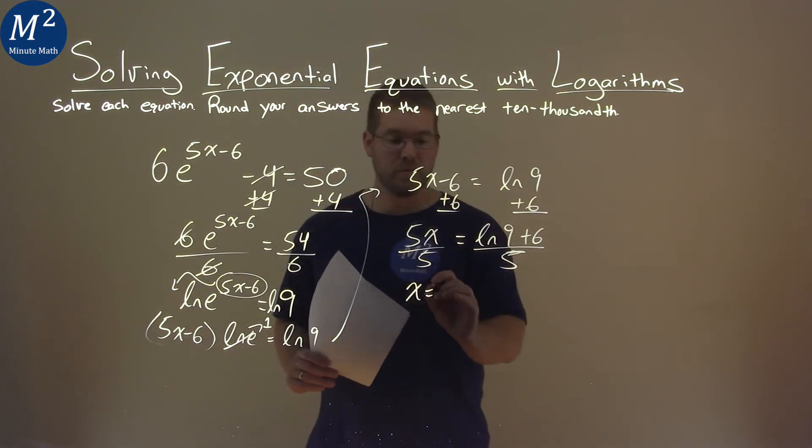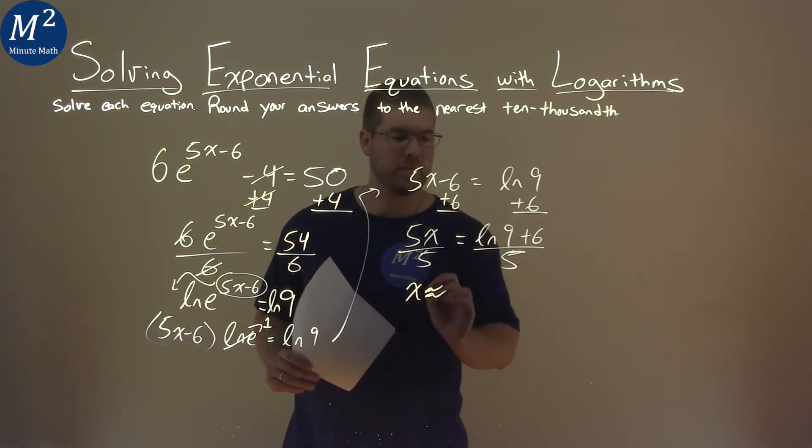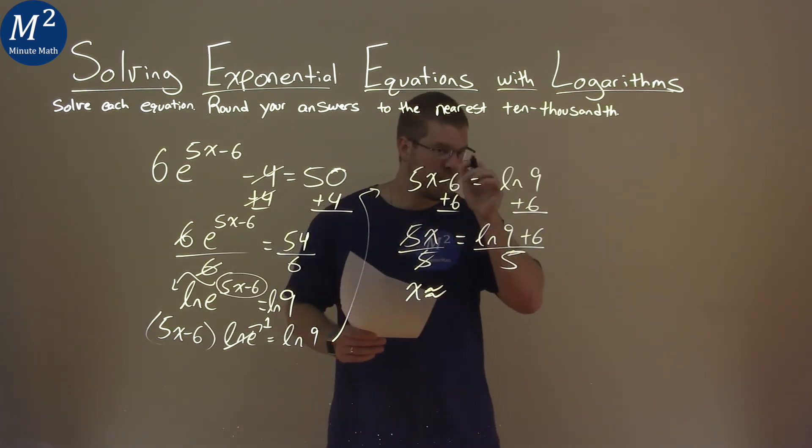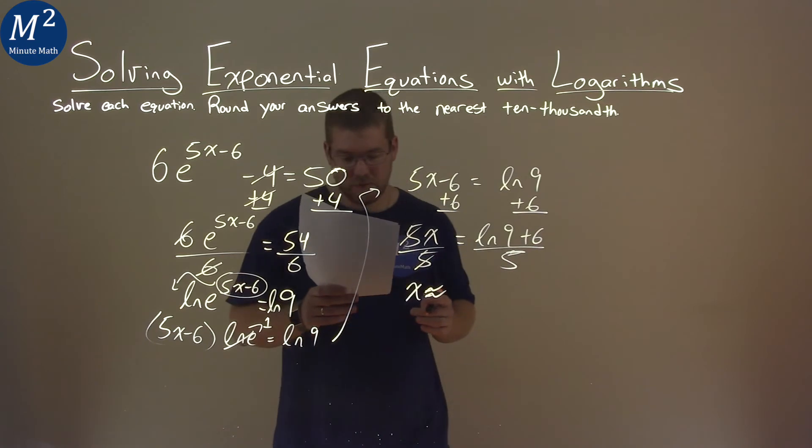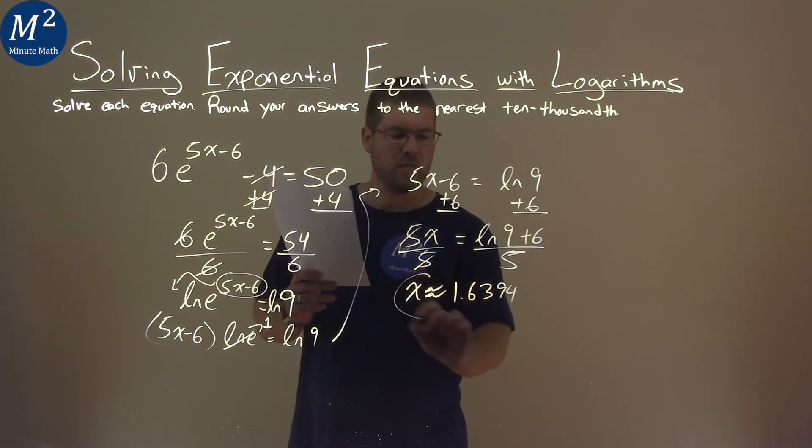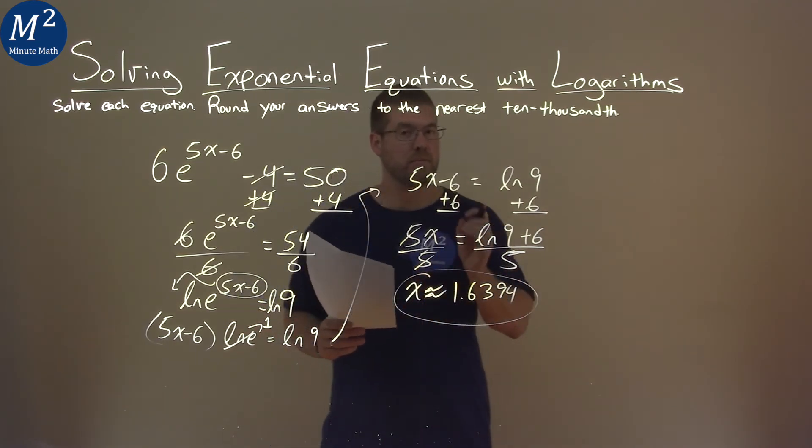x equals, and this is actually approximate here, and we'll use our calculator. Natural log of 9 plus 6 divided by 5 comes out to be approximately 1.6394. So our final answer is x approximately equals 1.6394.